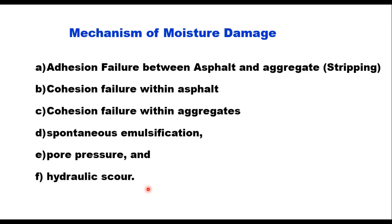These mechanisms are: adhesion failure between asphalt and aggregate, which we call stripping; cohesion failure within asphalt; cohesion failure within aggregates; spontaneous emulsification; pore pressure; and hydraulic scour. I will discuss each of these in brief.